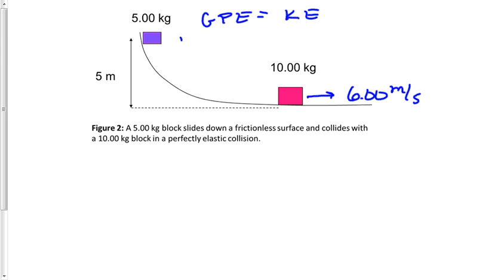I'll say m times 9.8 times 5 equals 1/2 mv². I know masses are going to cross off when I do this, so that's why I didn't bother putting masses in. So the velocity of the 5-kilogram block just before it hits the 10-kilogram block will be 9.9 meters per second.